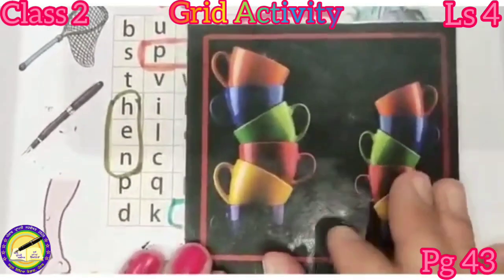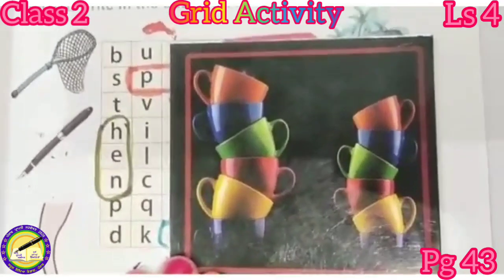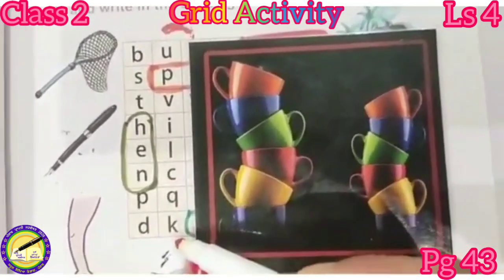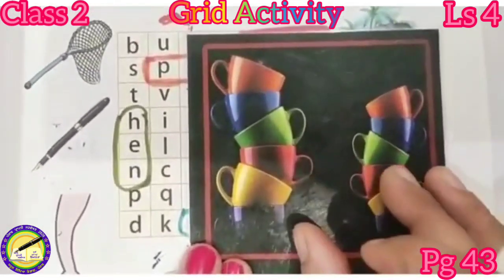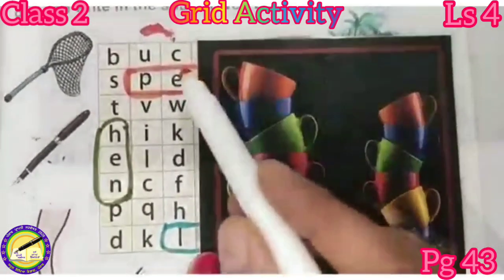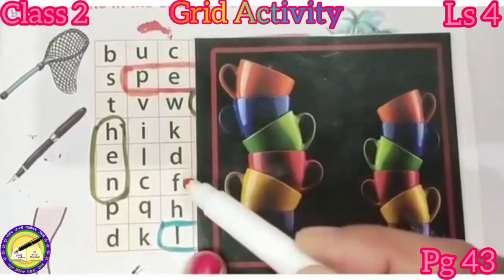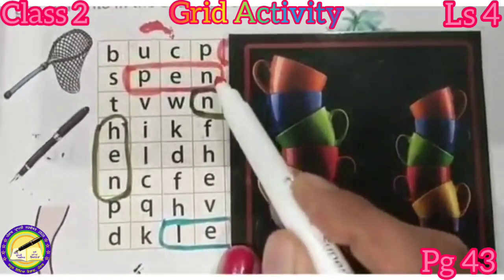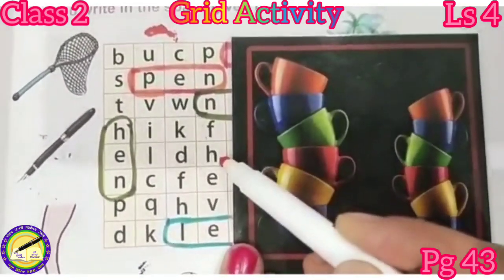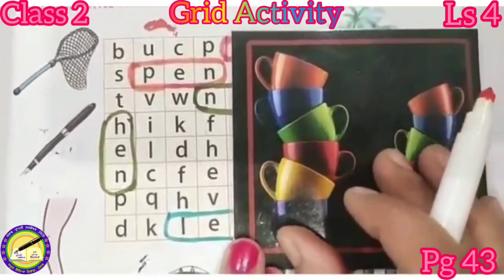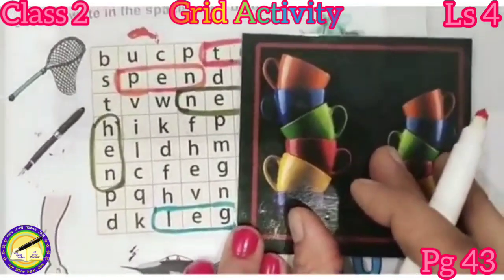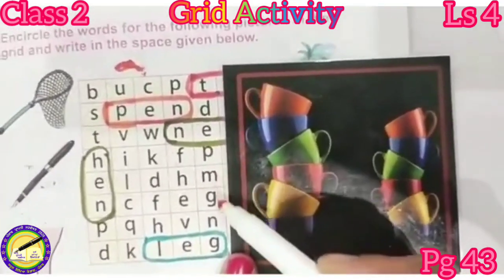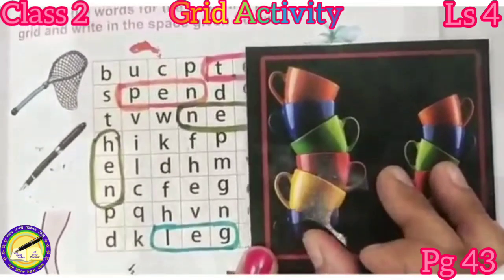Come on to the next vertical line: U, P, V, I, L, C, Q, K. No meaningful word. Next: C, E, W, K, D, F, H, L. No meaningful word. Next: P, N, N, F, H, E, V, E — no meaningful word. Next: T, D, E, P, M, G, N, G. No meaningful word.